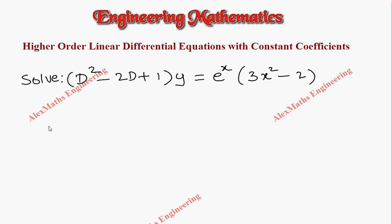It's a combination of exponential and algebraic expression. As the first part, we have to write the auxiliary equation which is m squared minus 2m plus 1 equals 0. On factorizing this we get m minus 1 whole squared equals 0.